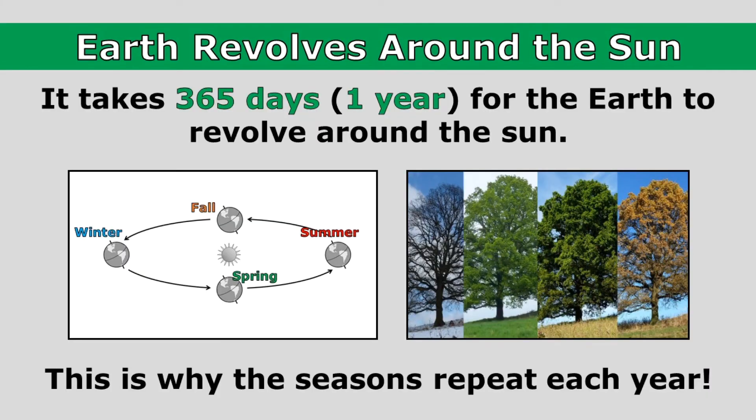It takes 365 days, or one year, for the earth to revolve around the sun. During that time, the earth goes from being tilted away from the sun to toward the sun and back, causing us to experience winter, spring, summer, and fall as the earth revolves around the sun. This is why the seasons repeat each year.